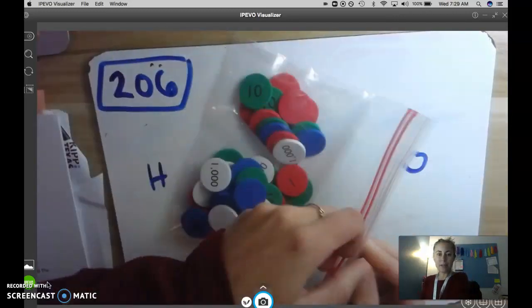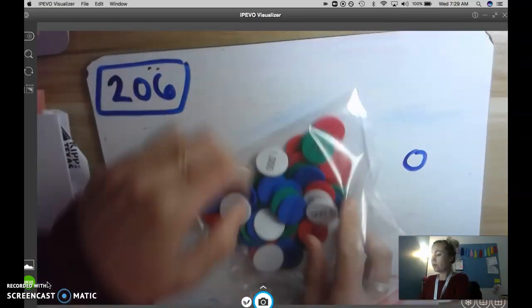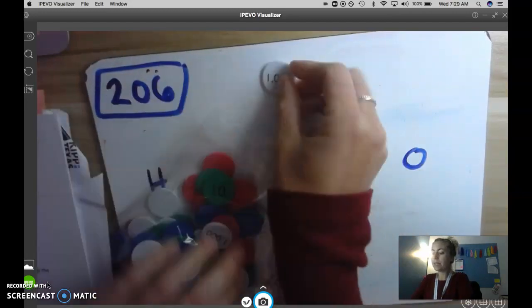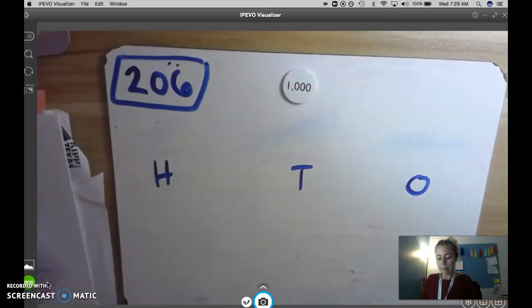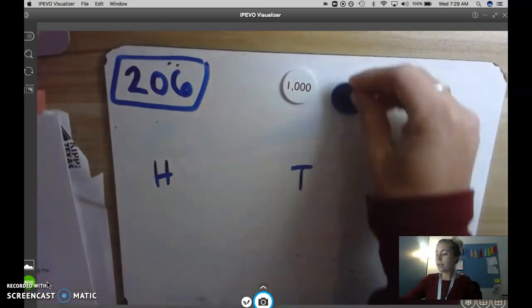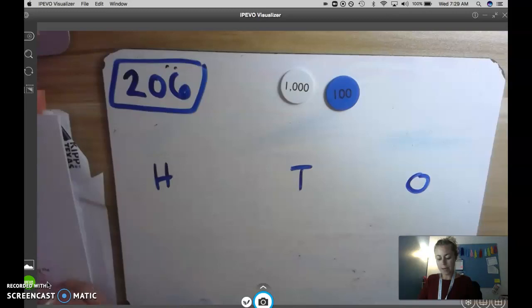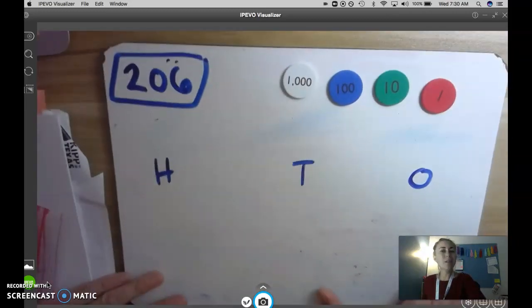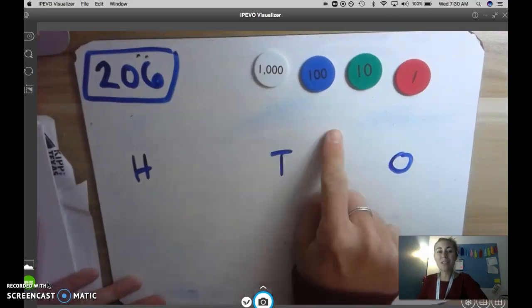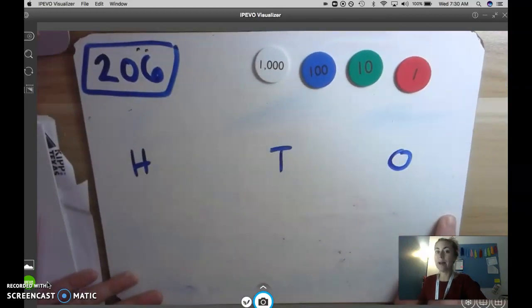So here are my place value discs here. As a reminder I have my thousands place value discs, my hundreds place value disc, my tens place value disc, and my ones place value disc. The color doesn't really matter but what's on the disc and which place it goes does matter.